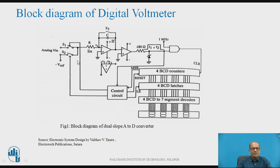Initially, switches S1 and S2 are open, and S3 is closed for some time so that the capacitor is discharged to 0 voltage, then S3 is opened. To start the conversion cycle, S1 is closed. When S1 is closed and the input is a positive voltage, it is applied through switch S1 to the input of the integrator. Therefore, the output of the integrator goes to a negative ramp.